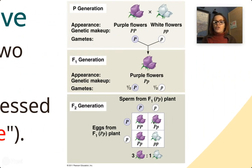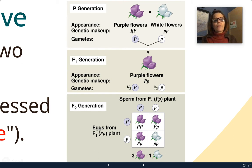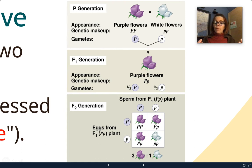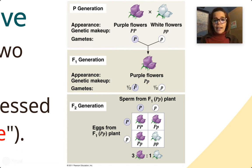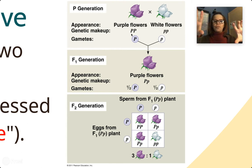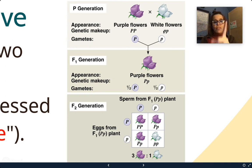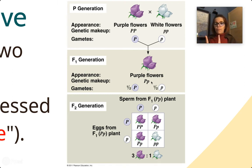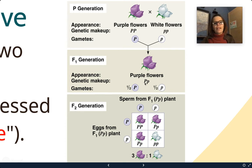Here is a Punnett square combining two pure-breeding, homozygous flowers — two big P's for purple and two little p's for white. Homozygous means two of the same letters. Recessive traits are always homozygous. For the sex cells, each organism donates half its DNA. The purple flower always donates a big P in its pollen; the white flower always donates a small p. All offspring get one big P and one little p and look 100% purple, because they all inherited at least one capital P dominant allele.